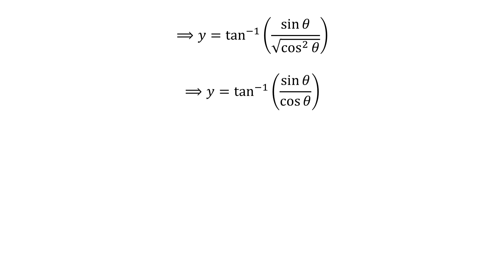We know square root of square of cosine of theta is equal to cosine of theta, so y is equal to inverse of tangent of sine of theta upon cosine of theta. As sine of theta upon cosine of theta is equal to tangent of theta, so y is equal to inverse of tangent of tangent of theta.